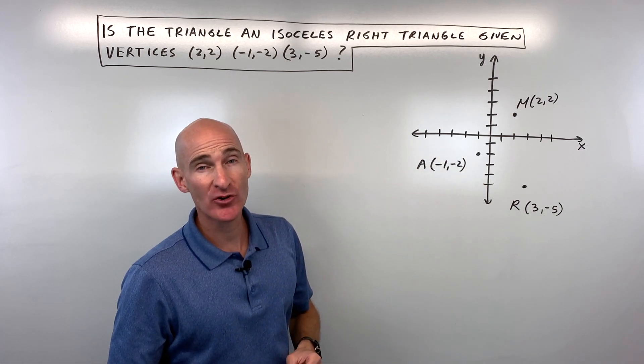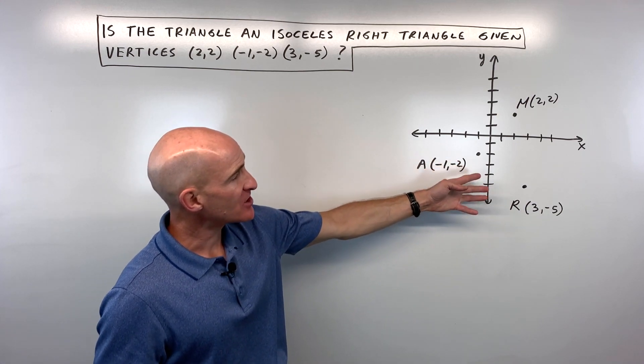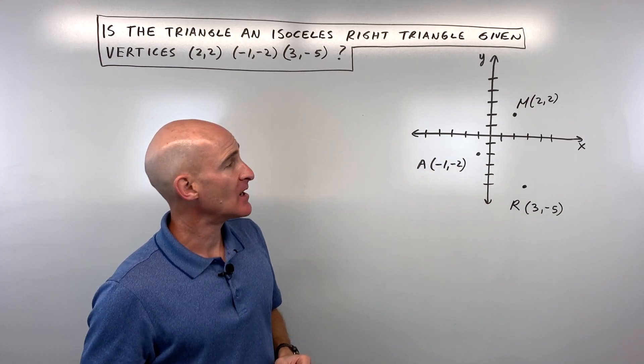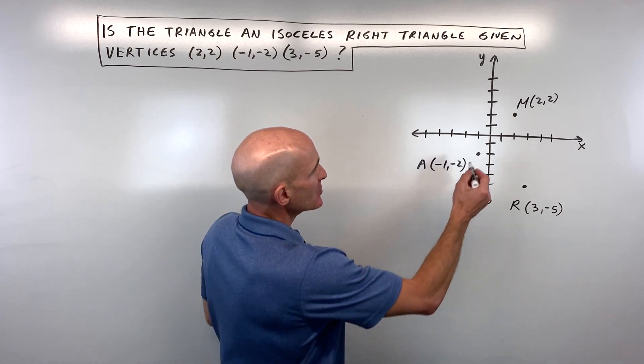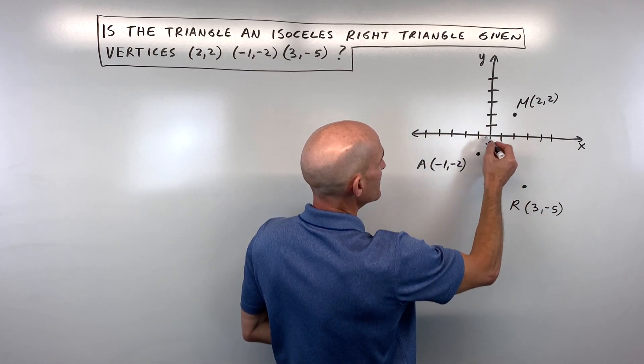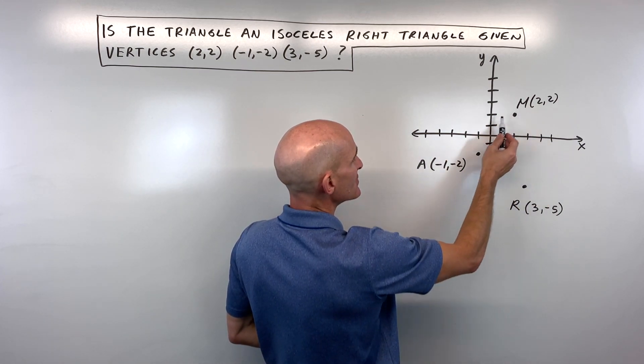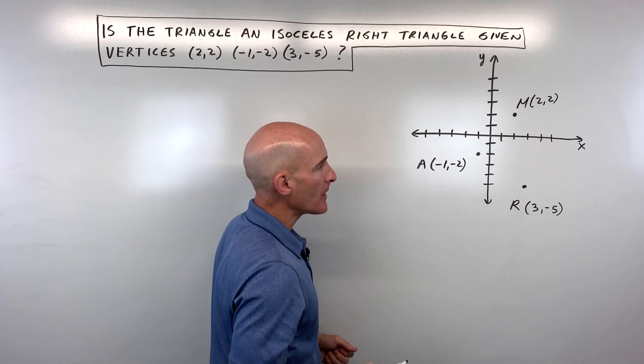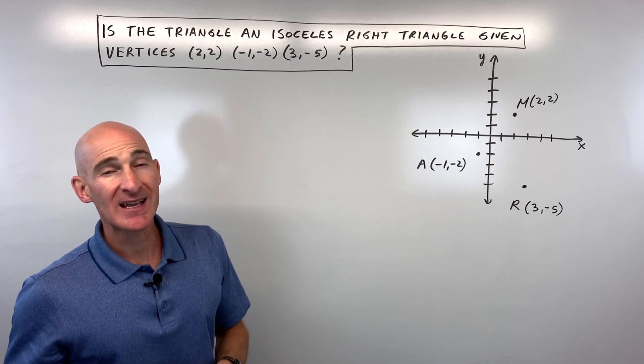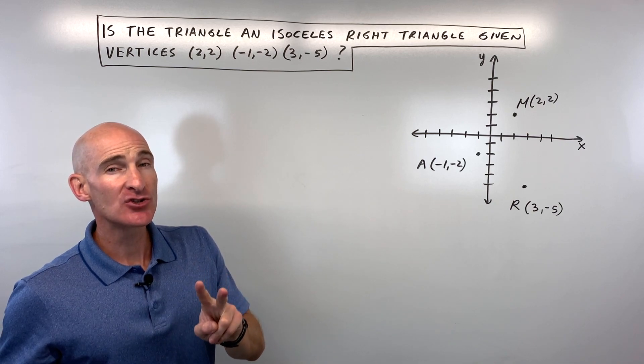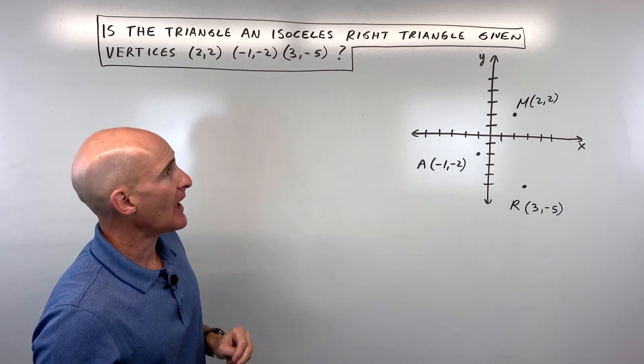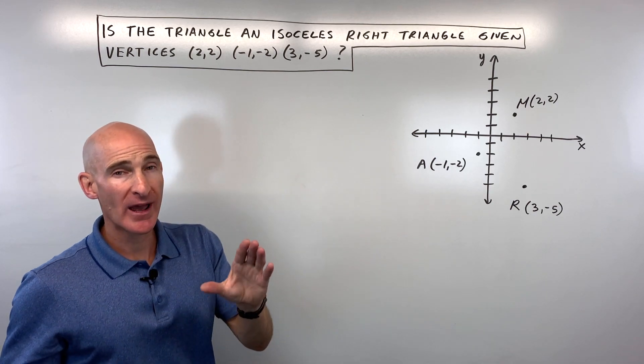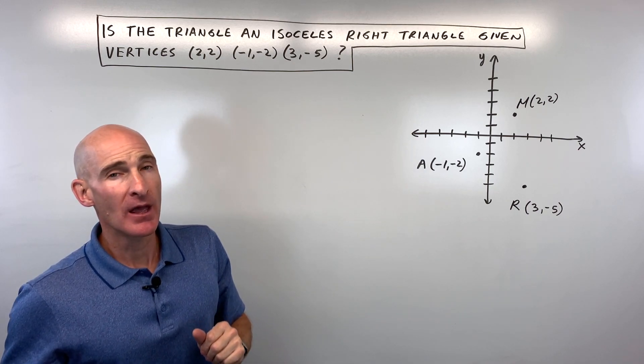Well, I sketched it out just to get a rough idea about what this looks like. You can see we've got a triangle something like this, and I labeled the vertices M, A, and R. We know an isosceles triangle has at least two sides that are congruent, and a right triangle has a 90-degree angle.